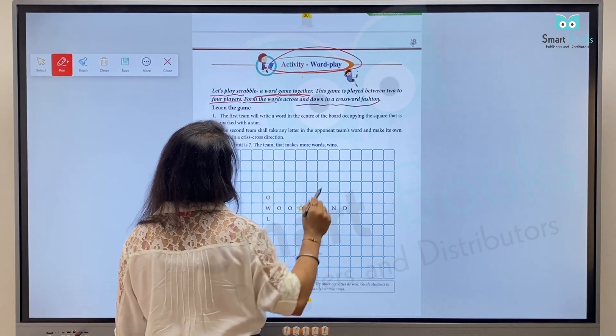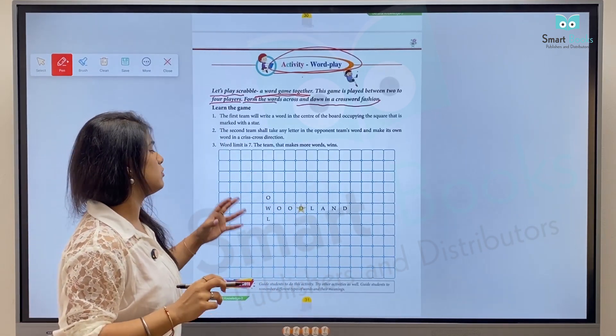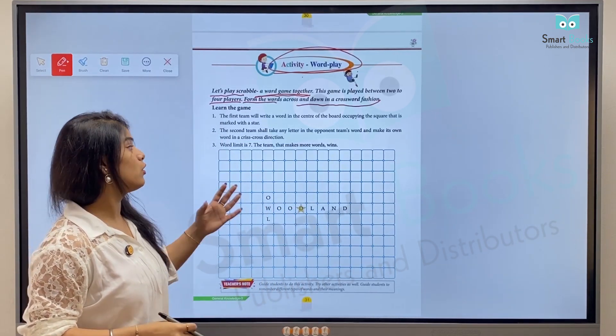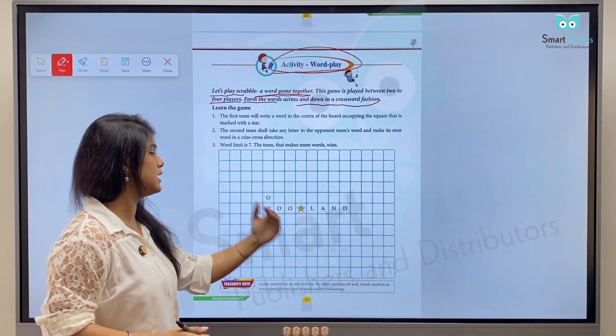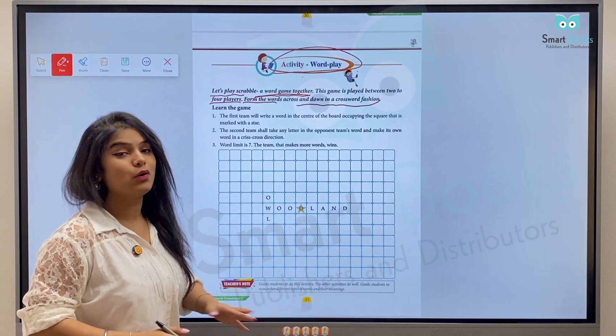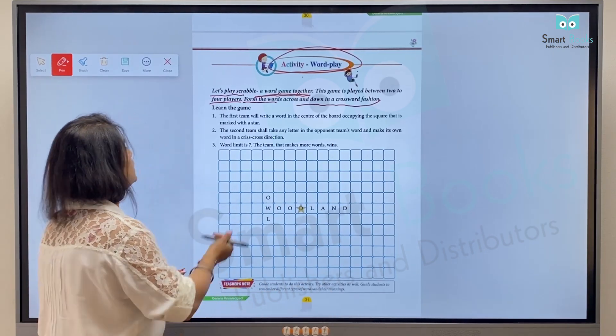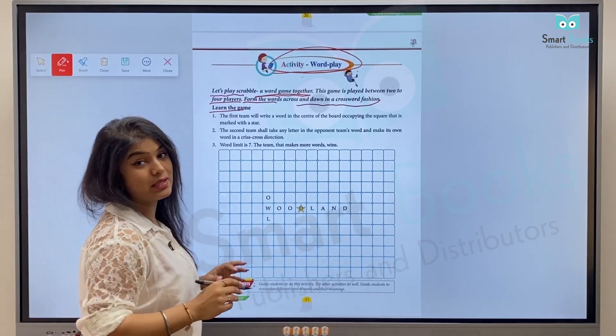Form the words across and down in crossword fashion. Words have to be formed across or downwards in that pattern. To learn the game, let's read the game instructions.